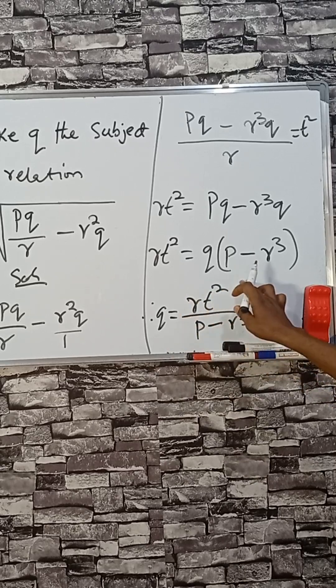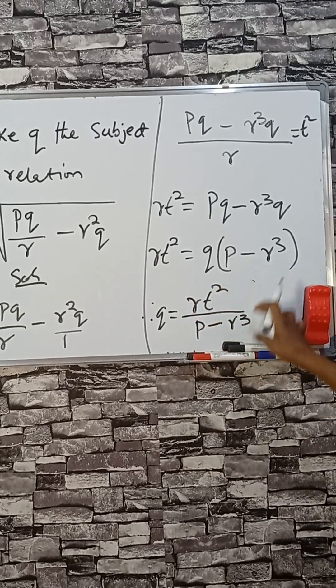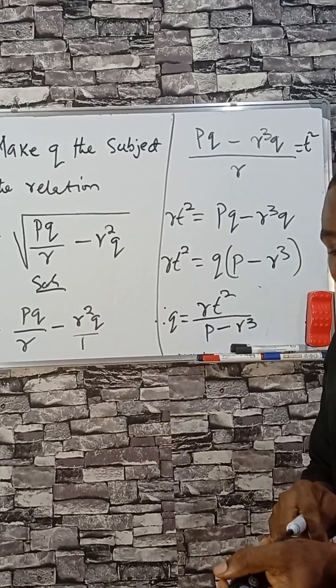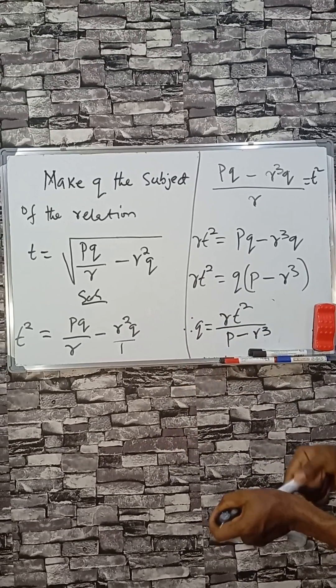r t squared divided by p minus r cube, that is q made the subject of the formula. We stop here.